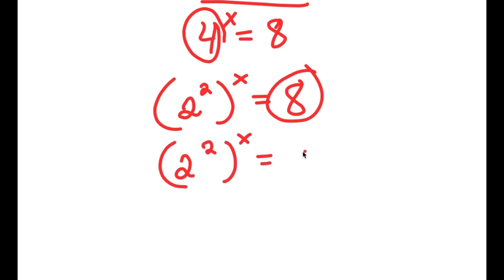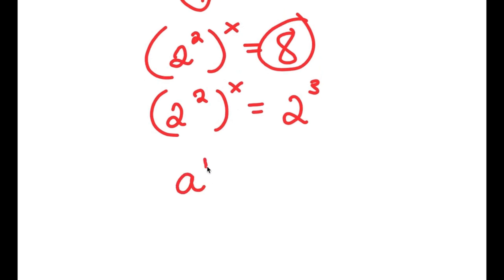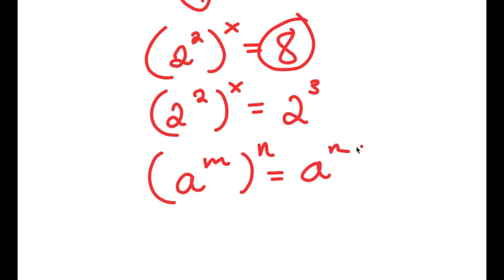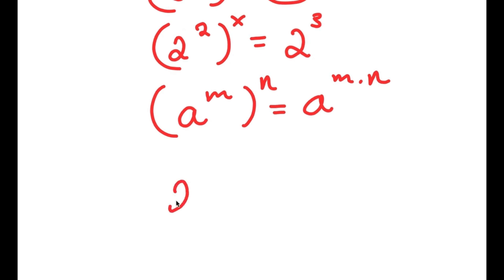So I have 2 squared to the power of x is equal to 2 to the power of 3. If I have something in the form a to the power of m to the power of n, this equals a to the power of m times n. So 2 squared to the power of x becomes 2 to the power of 2x, and this equals 2 to the power of 3.